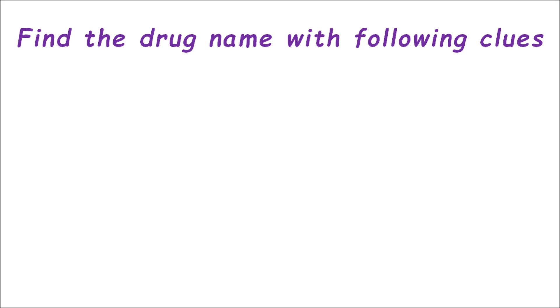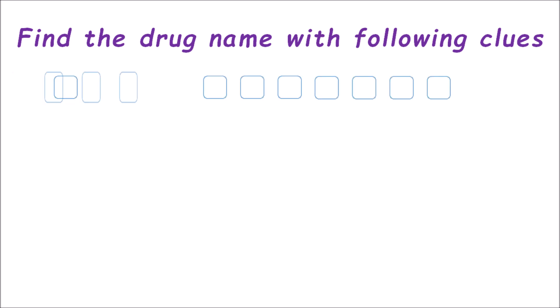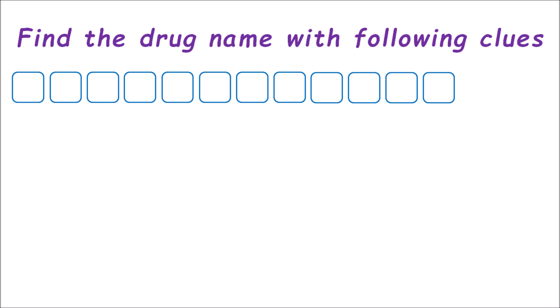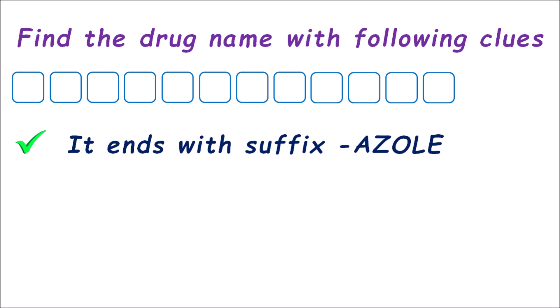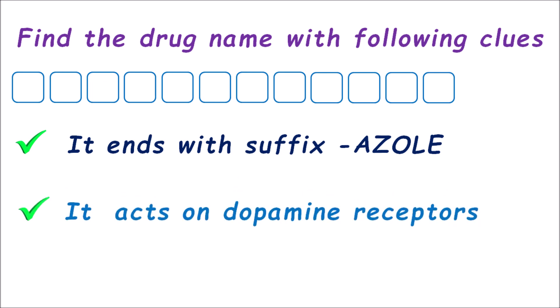The first puzzle: find the drug name with the following clues. These are the blocks given to fill the drug name. The clues are: first, it ends with the suffix -azole; second, it acts on dopamine receptors. Using these two clues you have to identify the drug name. You have five seconds to think about the right answer, or you can pause the video to spot the right answer.